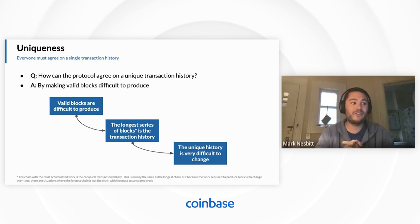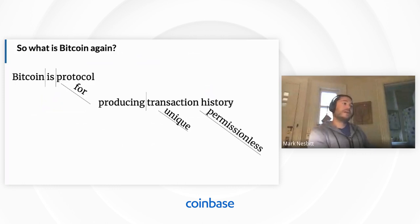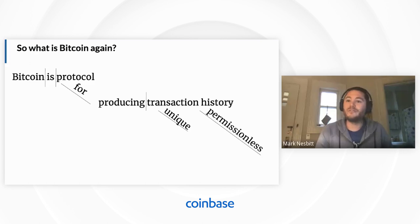To recap: how do we get a unique transaction history? Among all the infinite number of valid transaction histories, we introduce the rule that blocks are hard to produce. This creates the property of chaining blocks together and defining the longest chain as the valid transaction history. That sorts beautifully into an order where we can define the longest one as the canonical one, giving us a single unique history. This single unique history is very difficult to change because you have to compete with all the work that went into making it. These are the two characteristics that make Bitcoin transformative — it's unique and permissionless.